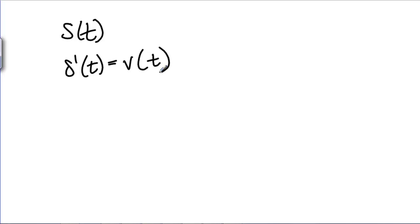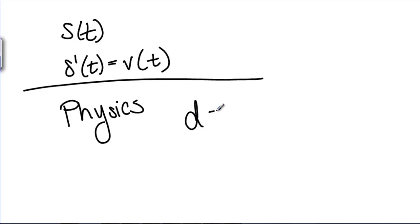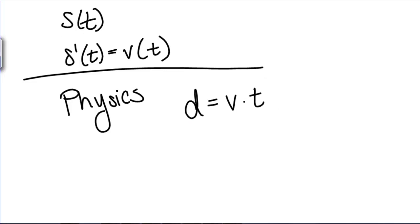But there's another way we can think about distance and velocity and time, and that's using a physics interpretation. Physics tells us that distance traveled or displacement is equal to velocity times time, or distance equals speed times time. Can we use this definition to help us find displacement? Well, it turns out we can.